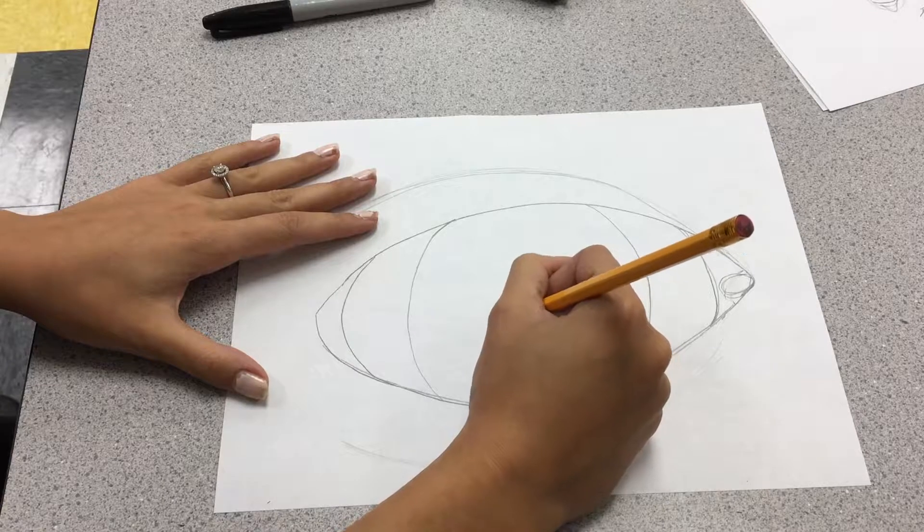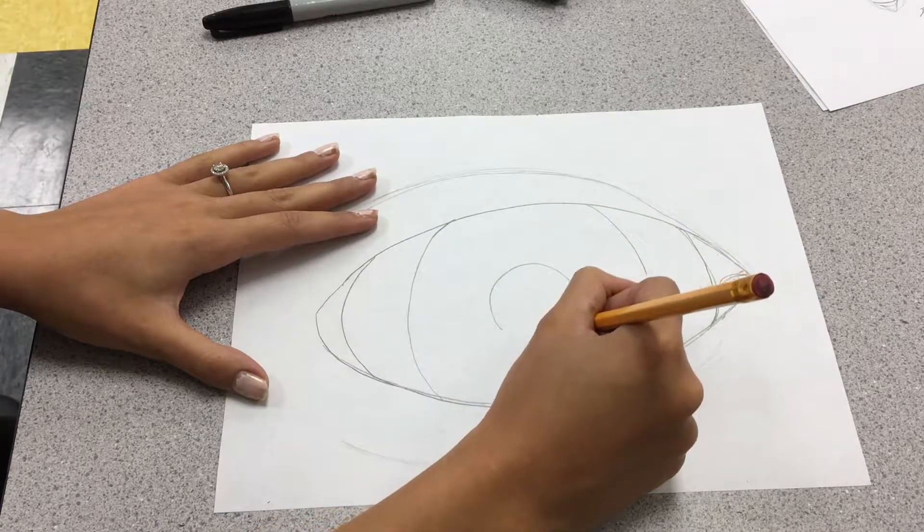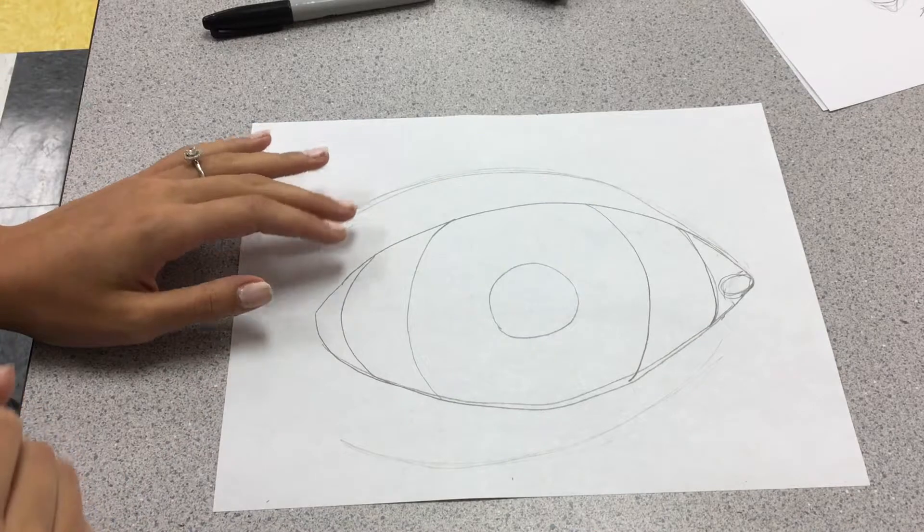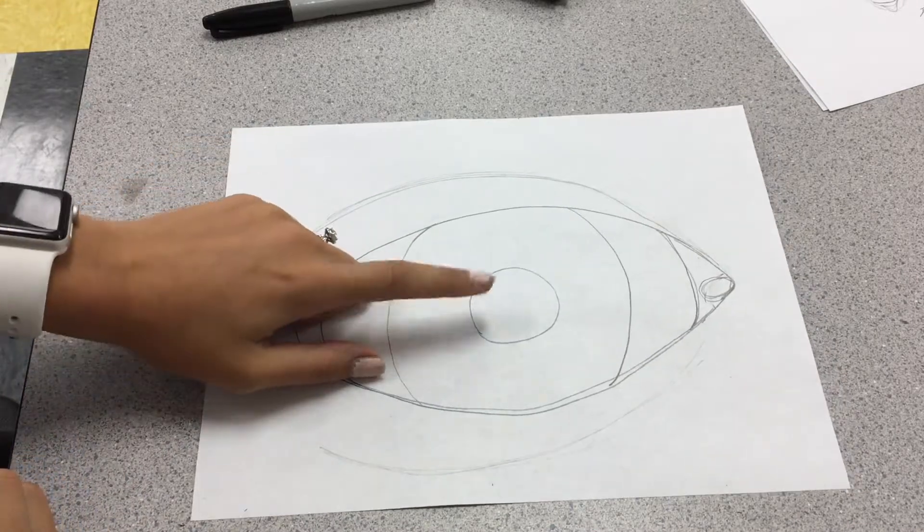Then you're going to make, and it doesn't have to be a perfect circle, that's okay. A circle in the middle. And that is your pupil.